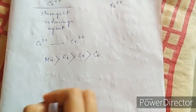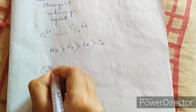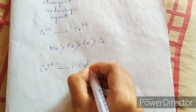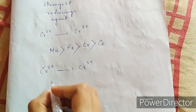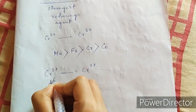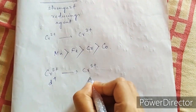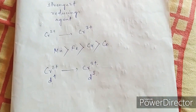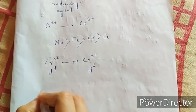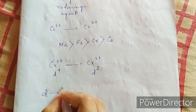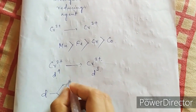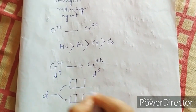Why is chromium 2+ the strongest? When chromium 2+ oxidizes and forms chromium 3+, the configuration changes from D4 to D3. In the d orbital, there are two parts: one is T2G, and another one is EG.